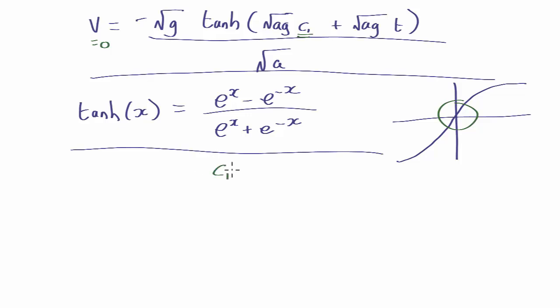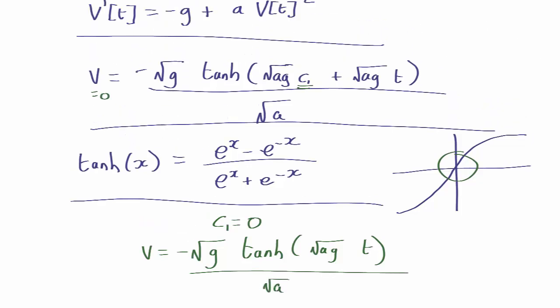So that means when t equals 0, that must equal 0, which means that root ag c1 must equal 0. So that tells us that c1 equals 0, and that gives our solution. If we decided arbitrarily that we were going to start when time equals 10 seconds, that would give us a different value of c1. So that's telling us that our velocity is actually hyperbolic tangent root ag times t over root a. And if you remember that little a is given by this here.